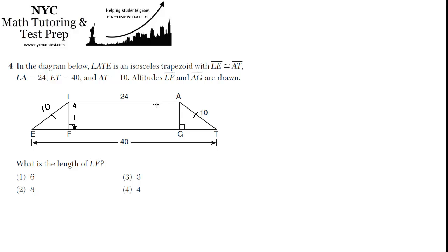So how do we do that? Well, let's look at this trapezoid. If the top is 24 and the bottom is 40, then how much longer is the bottom? It's 16 longer. 40 minus 24 is 16, so where is that 16? Well, half of it's here in EF, and half of it's here in GT.